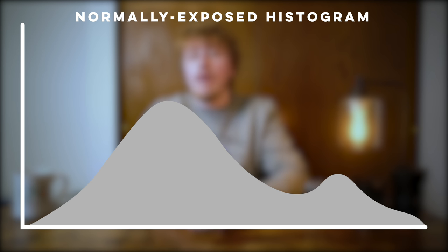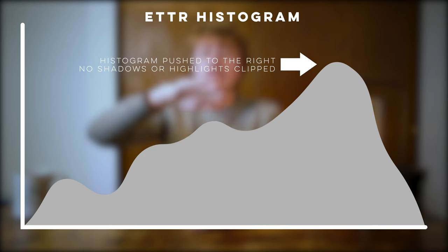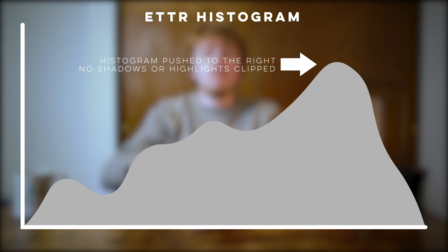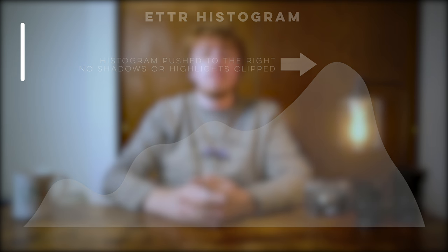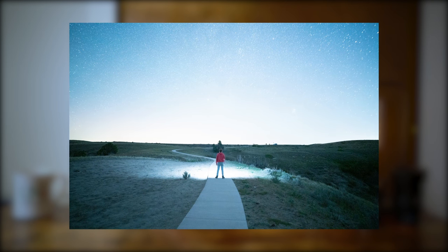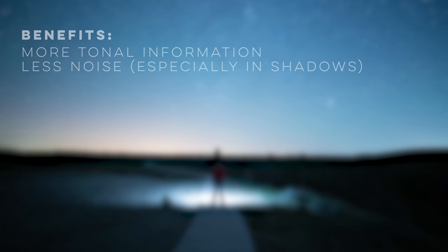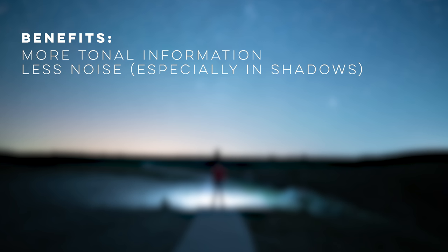Exposing to the right attempts to push the peak of the histogram — the part of the image with the most prevalent tones — as far to the right-hand side as possible without blowing out any highlights. While the image may look overexposed, when processed back to the correct brightness, it will contain more tonal information and less noise in shadow areas, maximizing image quality.